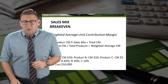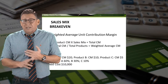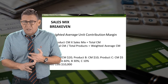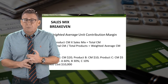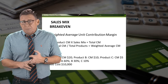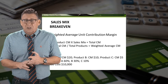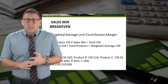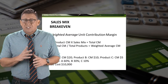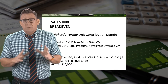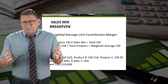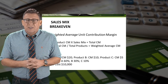Let's assume the following: Product A has a contribution margin of $20, Product B has a contribution margin of $10, and Product C has a contribution margin of $5. Let's assume the sales mix is 60% A, 30% B, 10% C, and our fixed costs are $10,000.